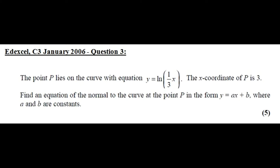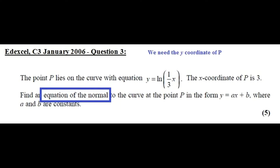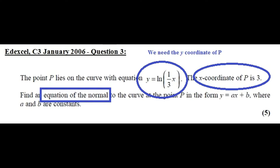We need the equation of the normal. To find the equation of the normal I need the y-coordinate — the corresponding y-coordinate. We have the x-coordinate given, which is 3. We can substitute x equals 3 into the equation of the curve to find the corresponding y-coordinate. Let's do that first, back to the paper and pen.